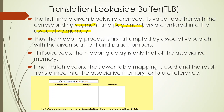In the normal procedure, the logical address provides the segment number, which goes to the segment table, then to the page table to get the block number, then combines with the word to access the correct block in main memory. This requires three main memory accesses. The TLB stores segment number, page number, and corresponding block number to speed up future lookups.